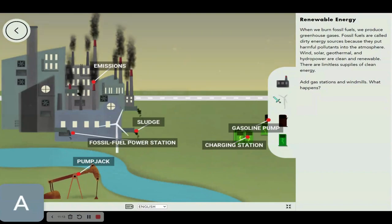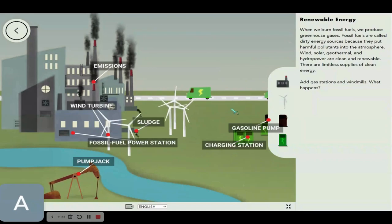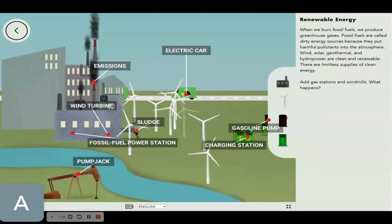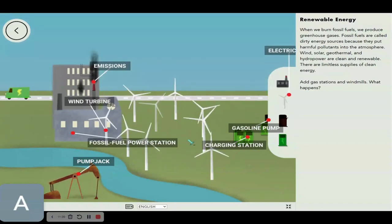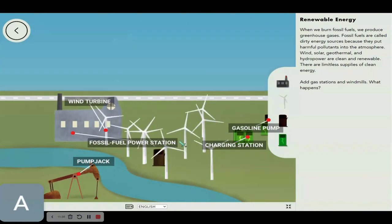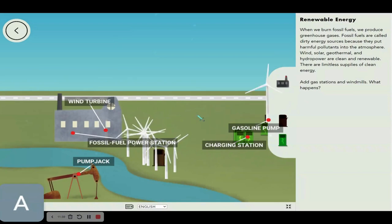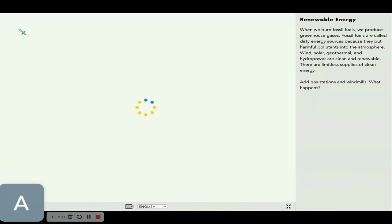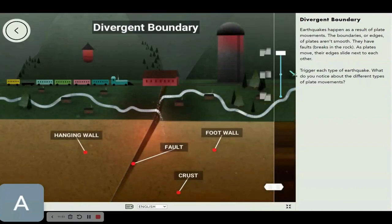But we can combat it by putting out wind turbines, charging stations, and electric cars. We should probably make electric cars cheaper and easier for people to access. Check it out, but the more wind turbines I put in, the less the environment gets affected. Let's check out earthquakes. Seems fun.